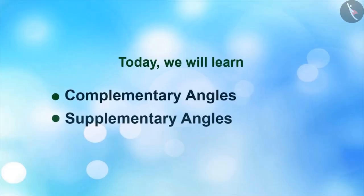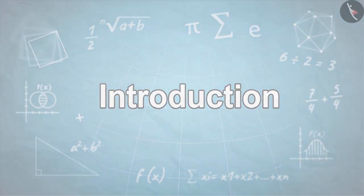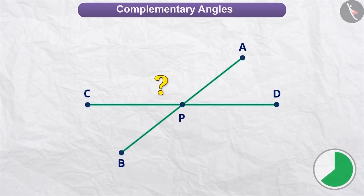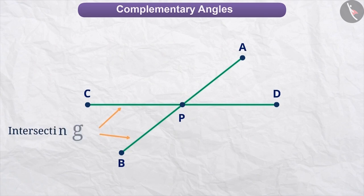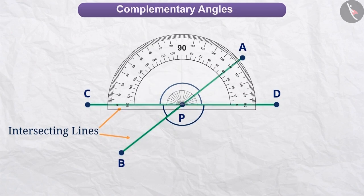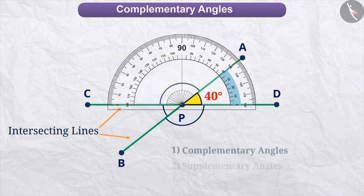Today we will learn Complementary Angles and Supplementary Angles. Lines AB and CD are intersecting at point P. We call such lines intersecting lines. Angles are formed by the intersection of two lines, and we measure the angle with the help of a protractor. Today we will learn two interesting concepts related to angles.